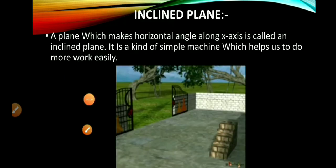Today I will discuss a very interesting topic which is inclined plane, taken from FSC Part 1 Chapter 3. What is meant by inclined? Inclined means an angle or slanting. A plane which makes a horizontal angle along the x-axis is called an inclined plane. It is a kind of simple machine which helps us to do more work easily.